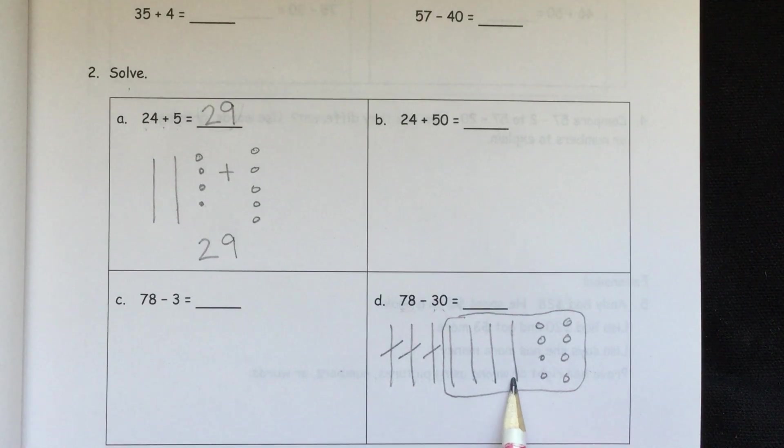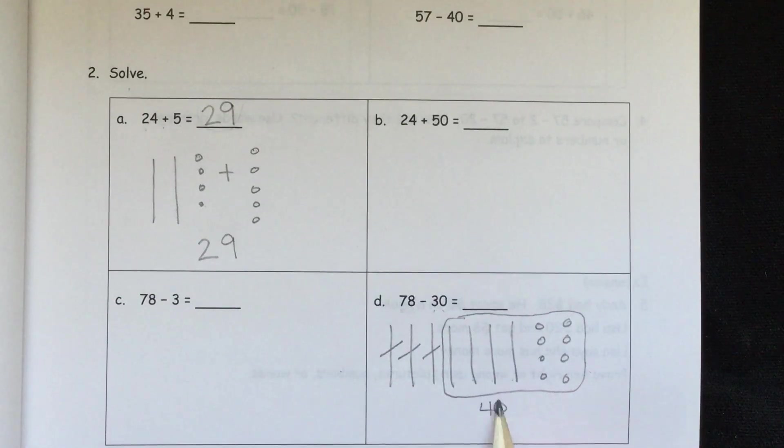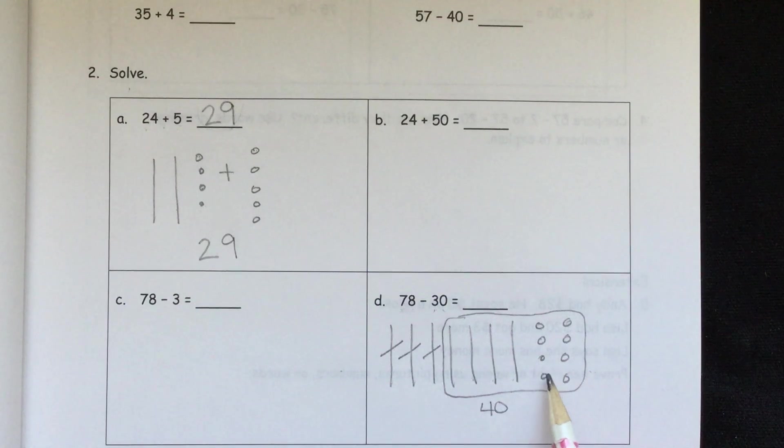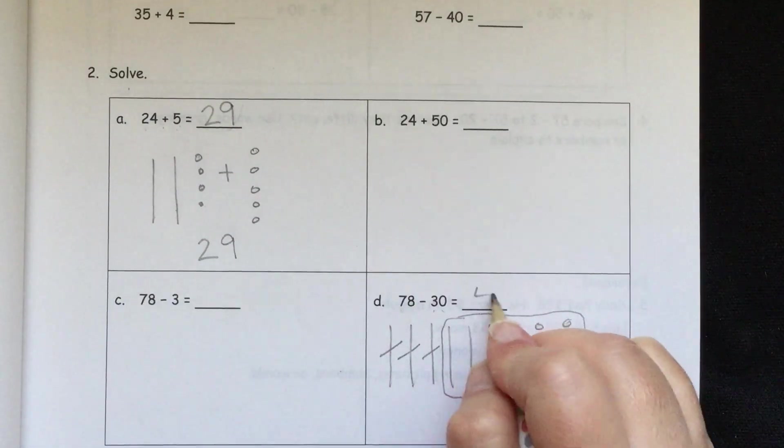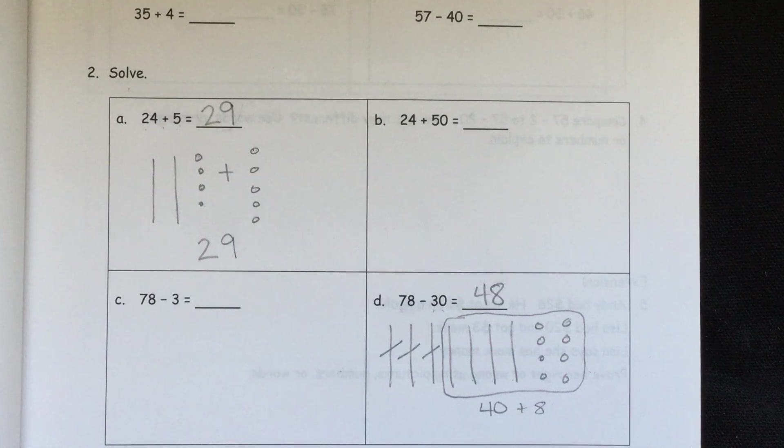So we have 10, 20, 30, 40, 41, 42, 43, 44, 45, 46, 47, 48. 40 plus 8, 48.